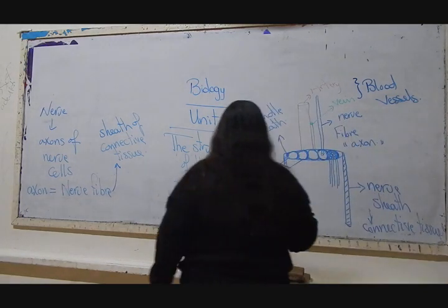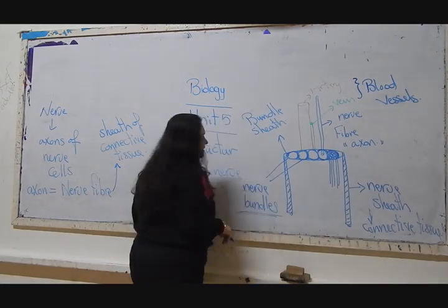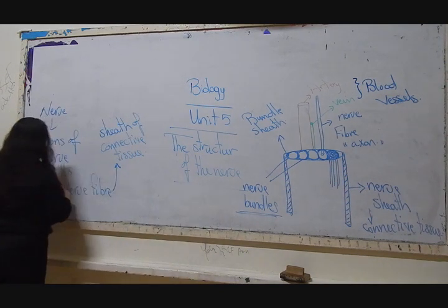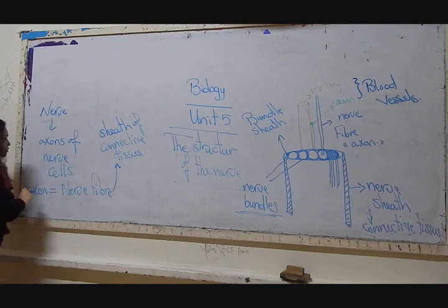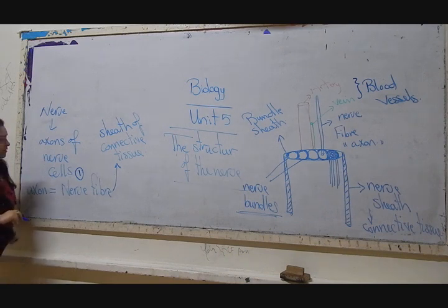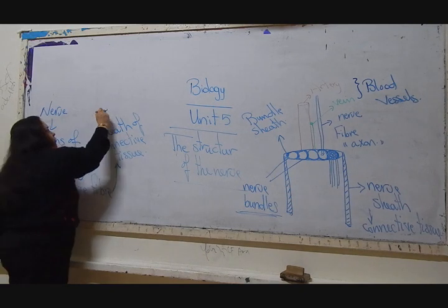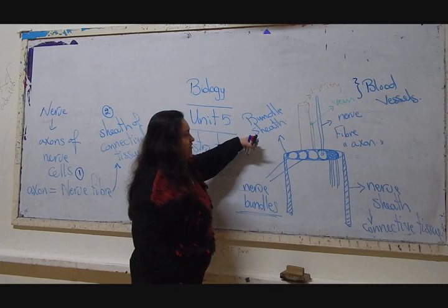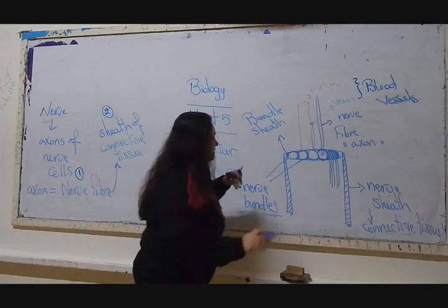The nerve. Again, what are the parts of the nerve? What is the structure of the nerve? The nerve is consisting of group of axons or group of nerve fibers. This is number one. For the nerve fibers, there is a sheath. We call it bundle sheath or the sheath of connective tissue.